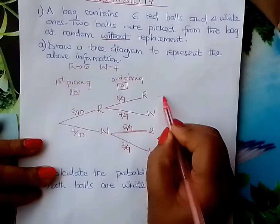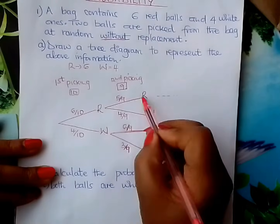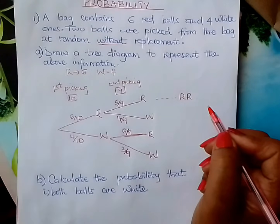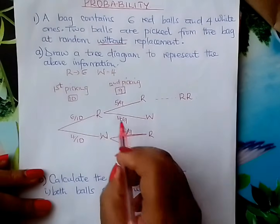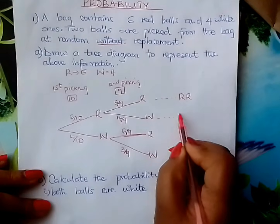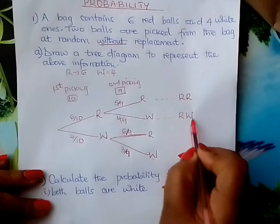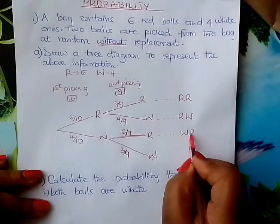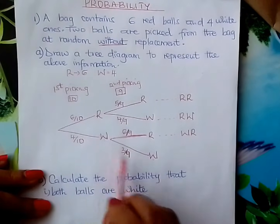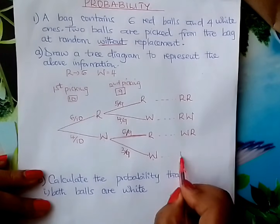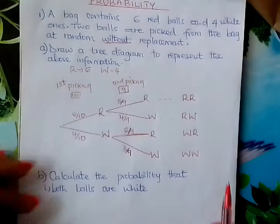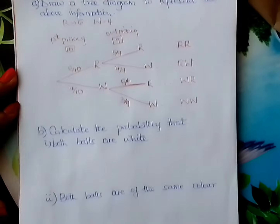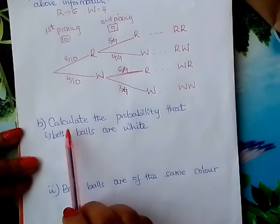From there, put your possible outcomes. You have RR — a red followed by a red. Here you have RW — a red followed by a white. Here you have WR — a white followed by a red. And finally WW — white, white. Those are the 4 possible outcomes. Now we come to the questions.